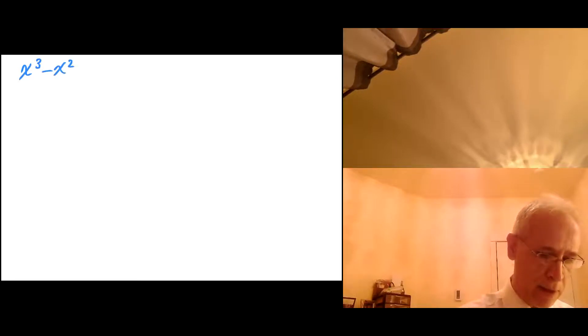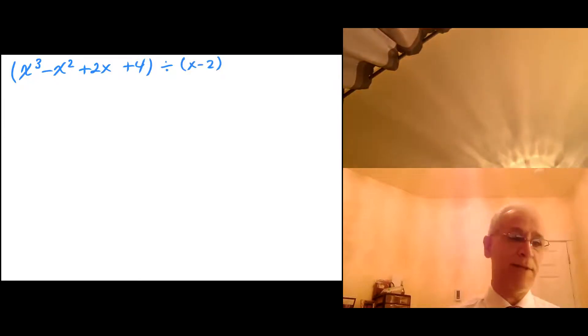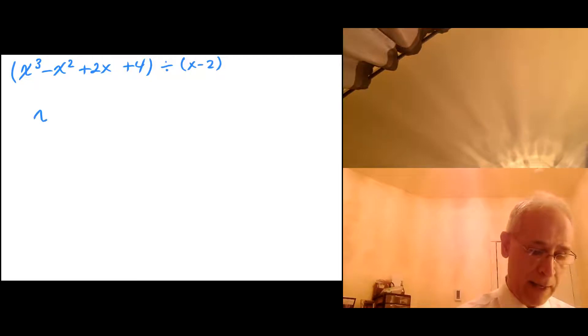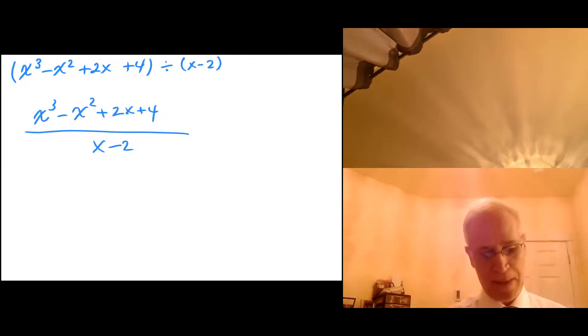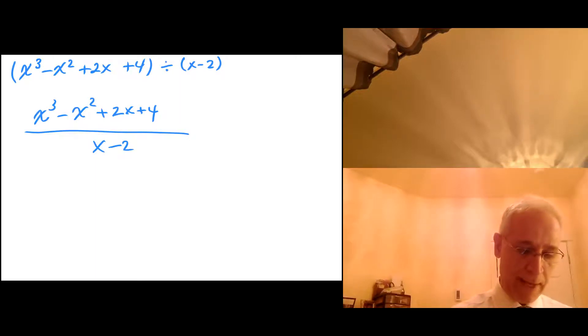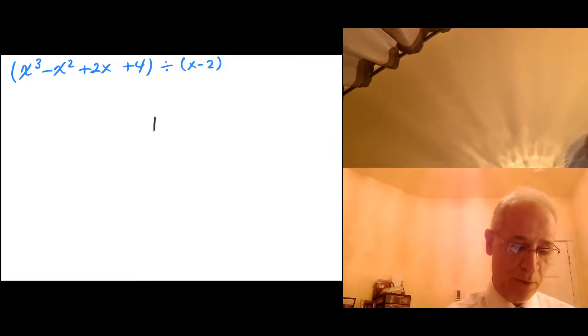Suppose that I'm doing x cubed minus x squared plus 2x plus 4, all divided by x minus 2. I could write that as a fraction: x cubed minus x squared plus 2x plus 4 over x minus 2. Remember, all divisions are fractions and all fractions are divisions. Now, write down the coefficients: the coefficient of x cubed is 1, coefficient of x squared is negative 1, coefficient of x is 2, and the constant is 4.